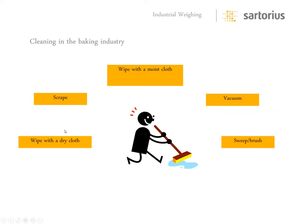In the baking industry, they'll wipe with a dry cloth, scrape, wipe with a moist cloth, vacuum, and then sweep and brush, as we'll see in some of the slides coming up.